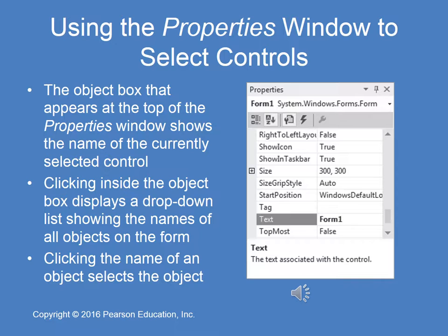Next, we're going to discuss the properties window and how to use it to select specific controls or objects. Here we see the properties window open, and the currently selected object is Form 1. Next to Form 1, you'll see its official long system name, then a drop-down arrow box. Selecting that drop-down displays a list of all objects on the form. Clicking an object's name selects it and shows all its properties. This is one of two ways to select an object — another is to left-click it graphically on the form.